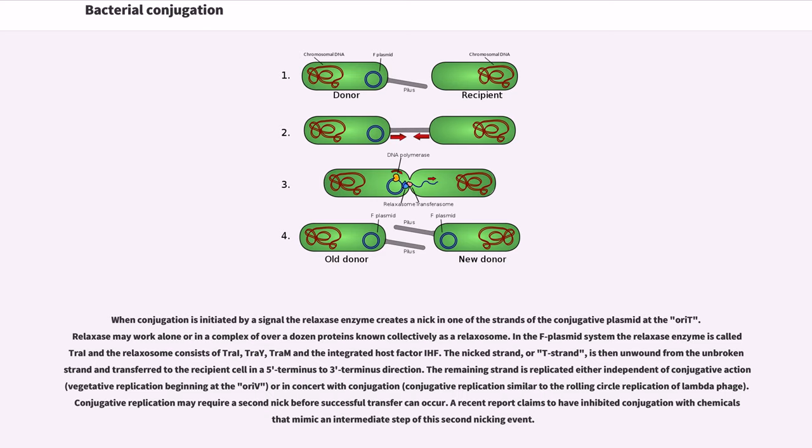The nicked strand, or T strand, is then unwound from the unbroken strand and transferred to the recipient cell in a 5' terminus to 3' terminus direction. The remaining strand is replicated either independent of conjugative action, vegetative replication beginning at the oriV, or in concert with conjugation, conjugative replication similar to the rolling circle replication of lambda phage.